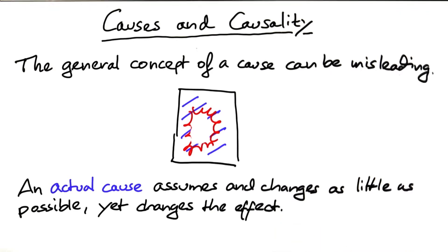For debugging, the same holds. You want to have a cause that assumes and changes as little as possible, but still produces the effect. And that's precisely what delta debugging gets you.